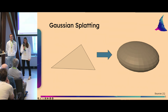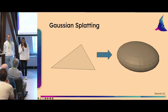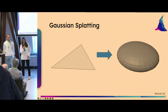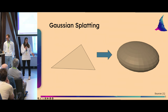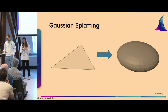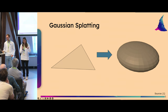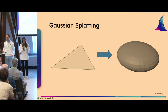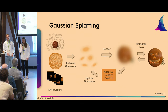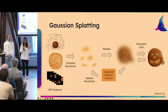In Gaussian Splatting the idea is different — we replace triangles with 3D Gaussians. It sounds complicated, but basically it's just a blob. We position these blobs strategically in 3D space such that when blended together in rendering they look equivalent to a very complex scene with millions of triangles.